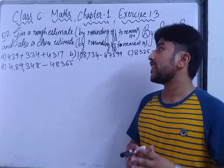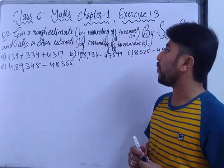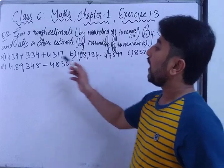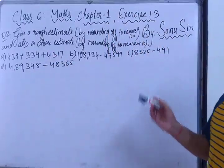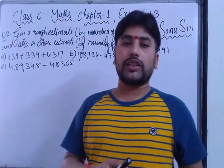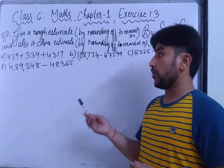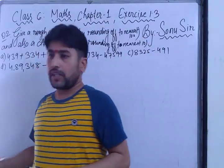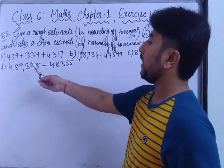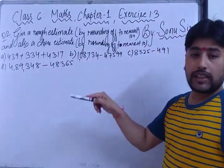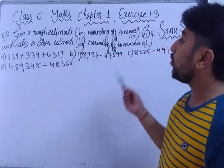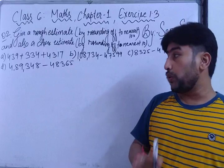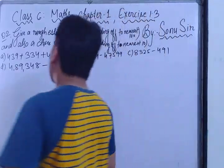Hello students, today we are going to discuss Class 6 Maths, Exercise 1.3, Question number 2. You have to give a rough estimate by rounding off to nearest hundred, and also a closer estimate by rounding off to nearest ten. So in this question, you have to solve each one two times.